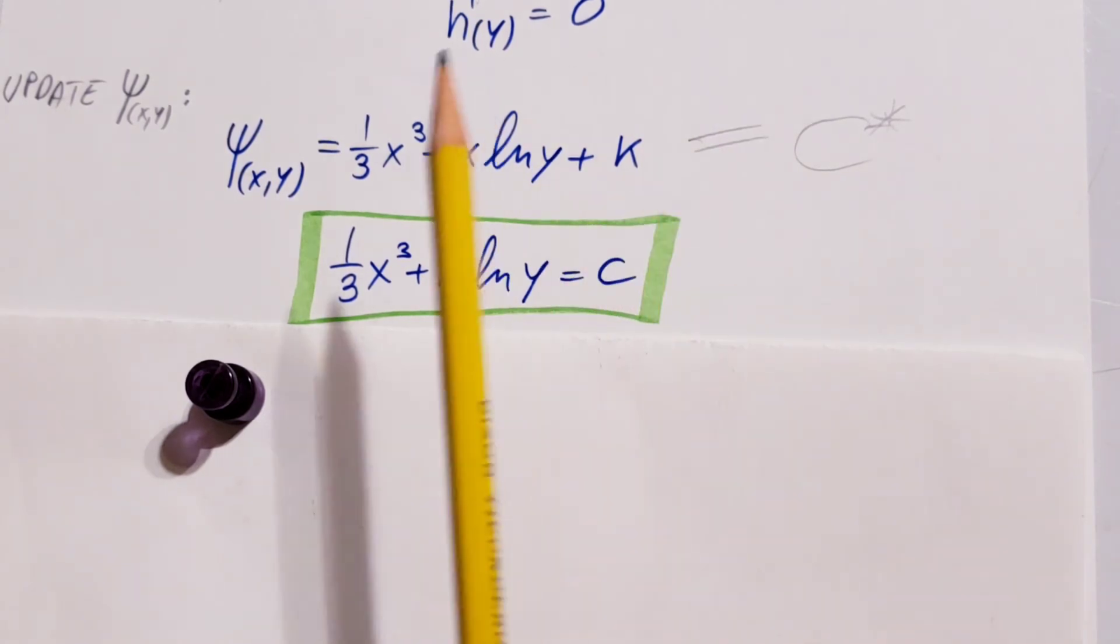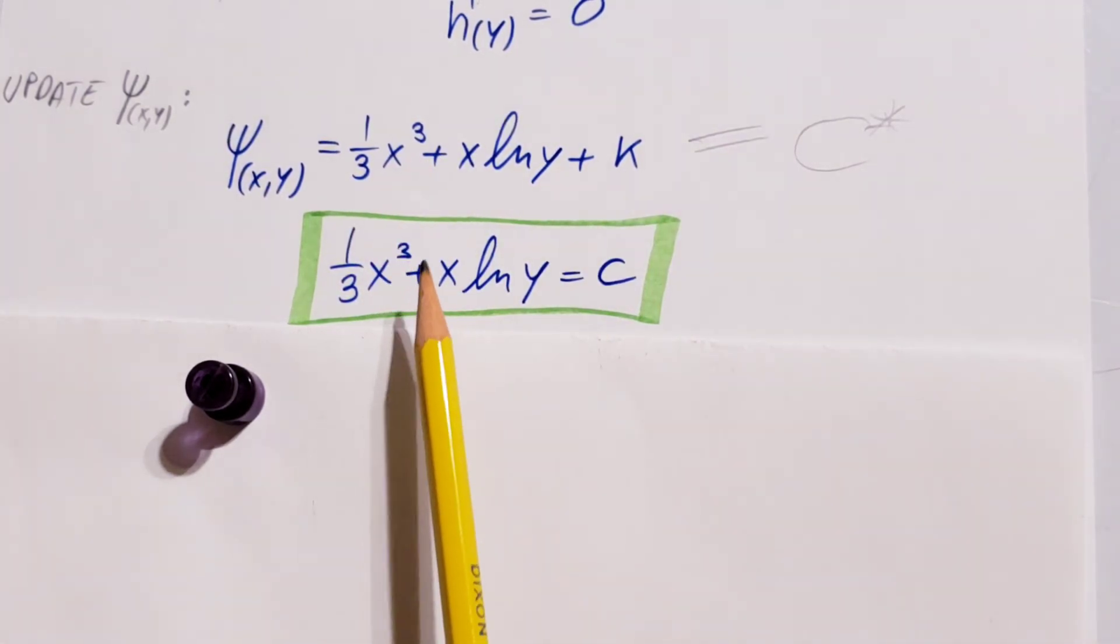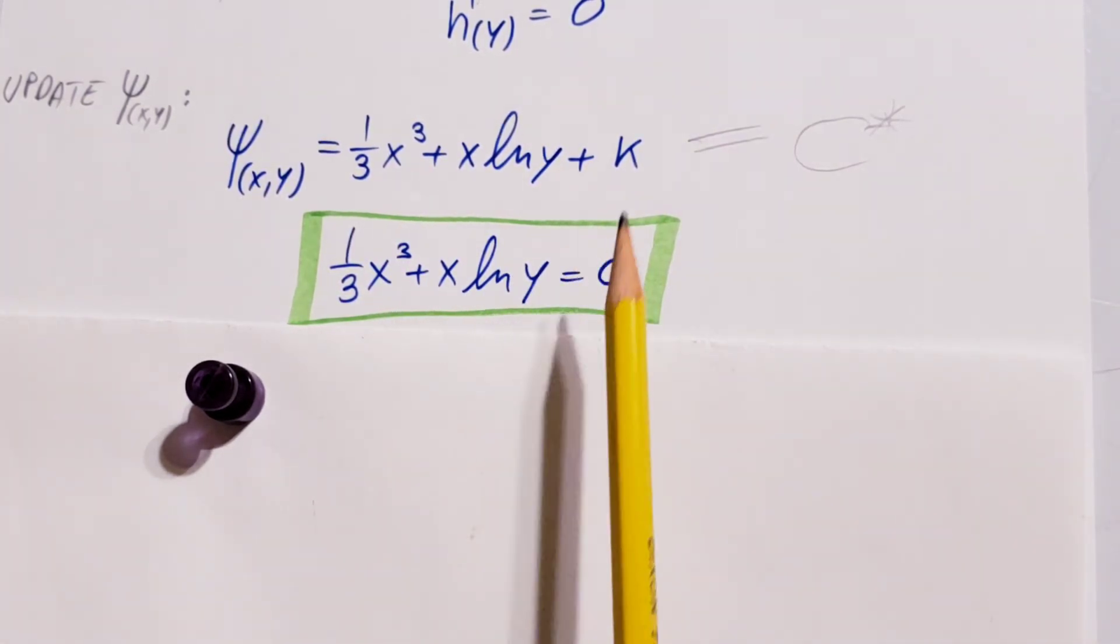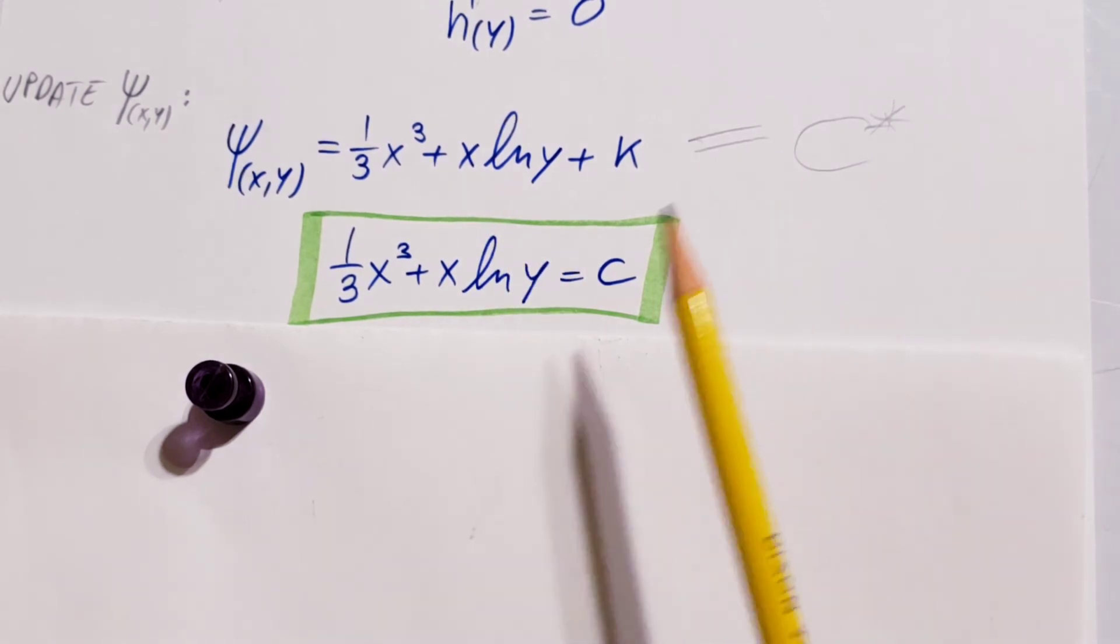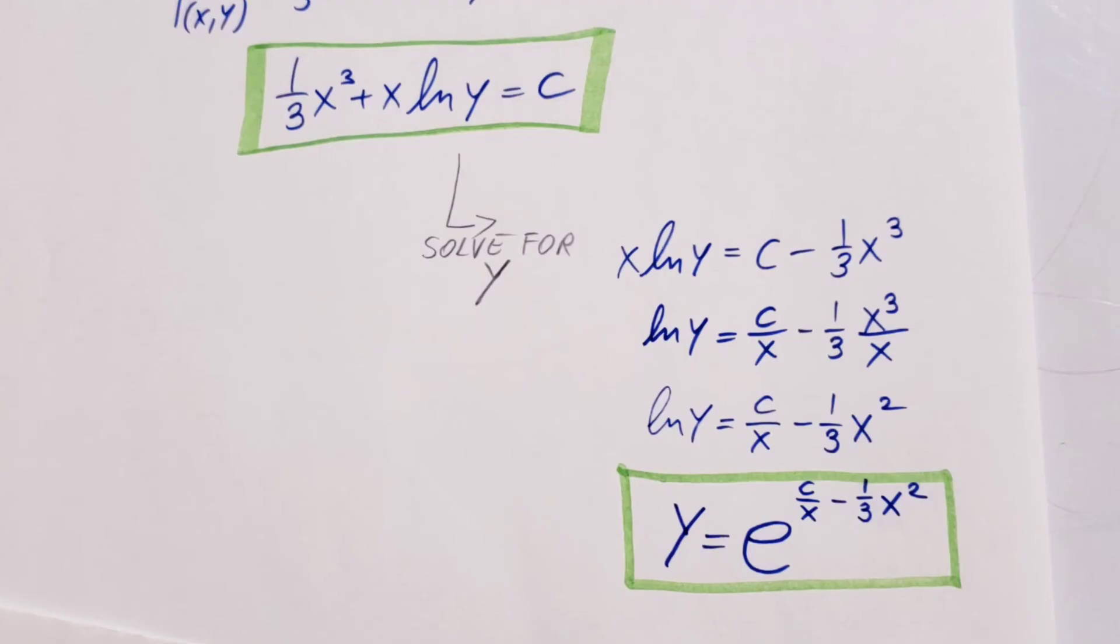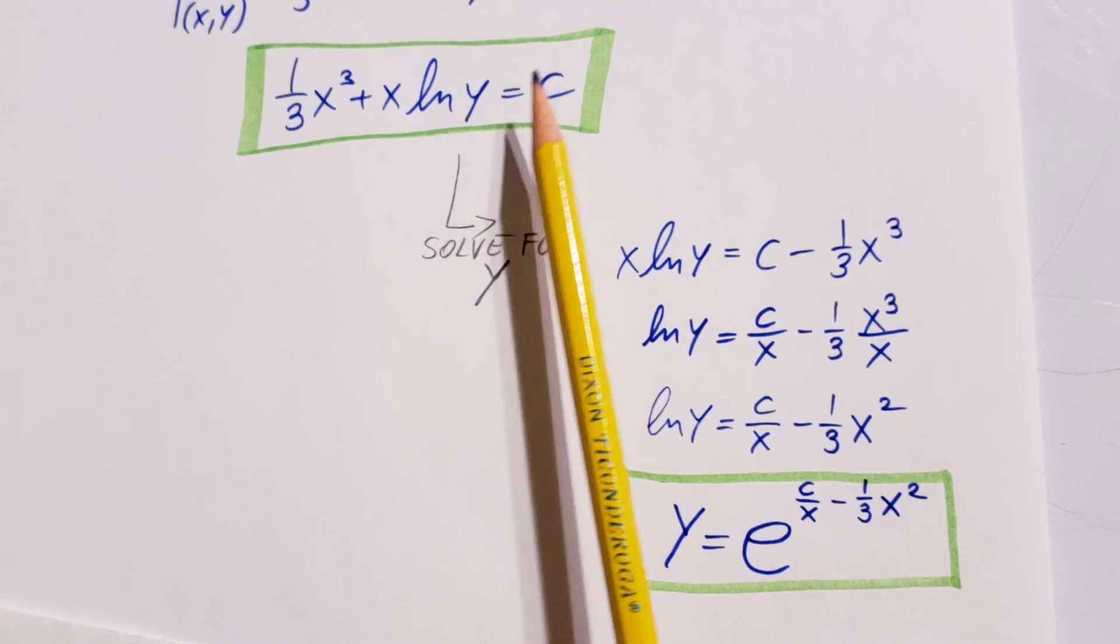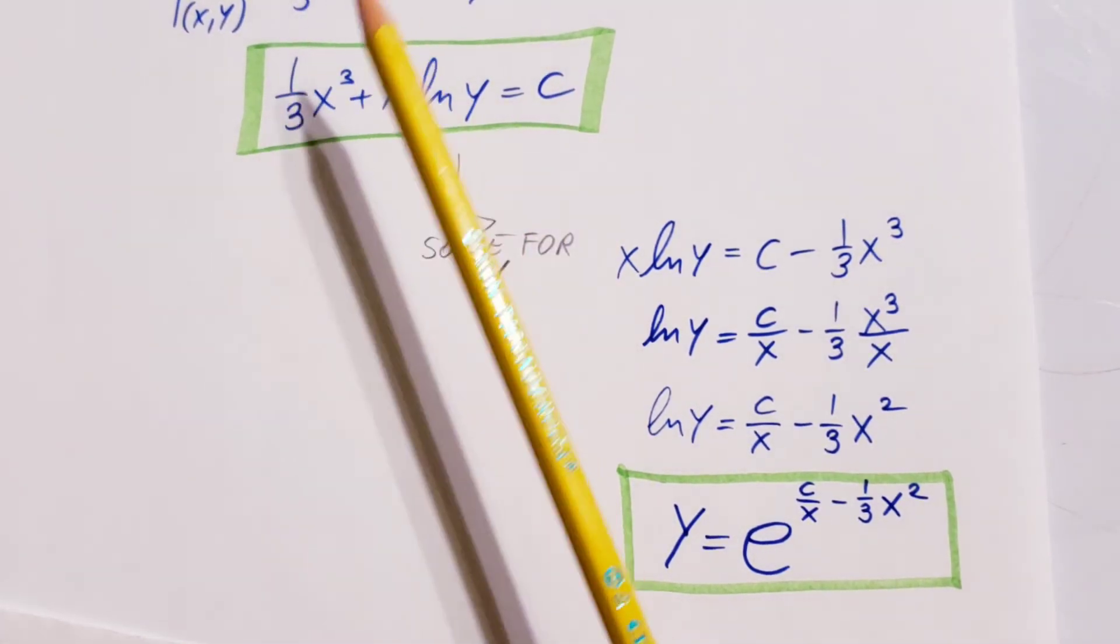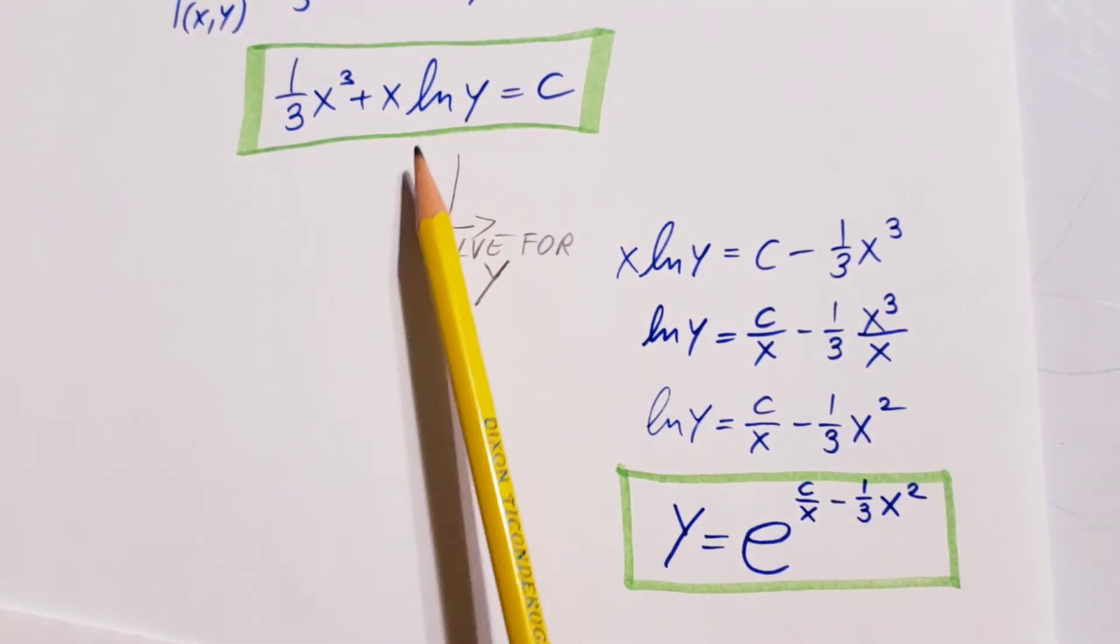Okay? Now, 1 third x to the third plus x ln y equals c. This is my final solution. Now, a lot of times they want us to solve for y in our solutions, so instead of leaving it this way, just solve for it.